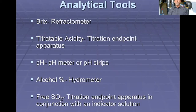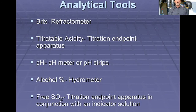What are some of the analytical tools we have to measure these categories? Typically, we use a refractometer to measure BRIX. We use a titration endpoint apparatus to measure titratable acidity. We measure pH with a pH meter, or more simply with pH strips — however, they are less accurate. We measure percent alcohol with a hydrometer and use a titration endpoint apparatus in conjunction with an indicator solution to determine the free SO2.